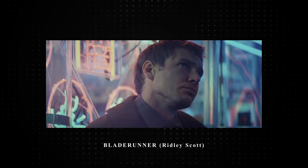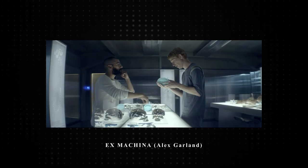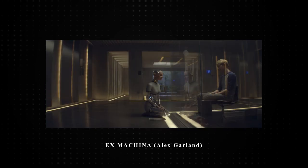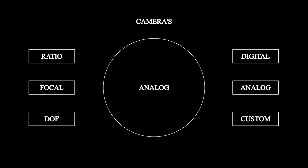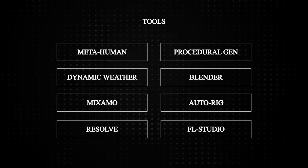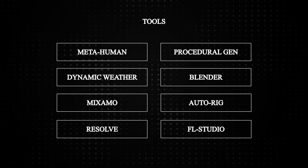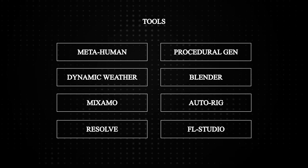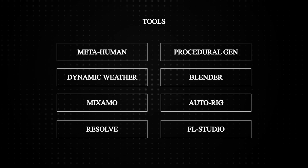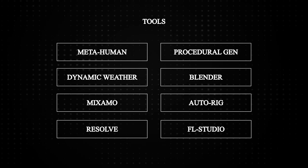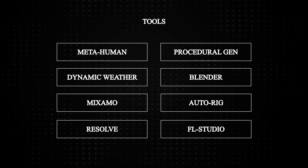A few films that use this include Blade Runner and Ex Machina. So by simply using a custom sensor of 35mm and 15.06, we can create a cinematic lens moving forward for our project. I will dive into this in a lot more depth in our next episodes. For my tools, I will be using the Ultra Dynamic Sky for exterior lighting, which will also be used for various weather systems. For building my environments and set designs, I will be using procedural generation. When using MetaHuman, I will be limiting face animations as much as possible. Blender will be used for any 3D modelling. Mixamo and AutoRig will be used for any non-human characters and simple animations. DaVinci Resolve will then be used for compositing and editing. And lastly, FL Studio will be used for music composition and sound effects.